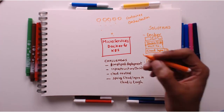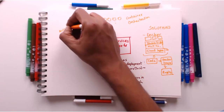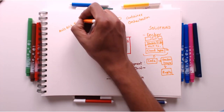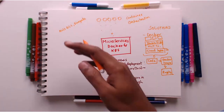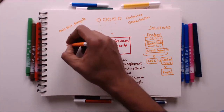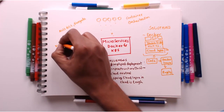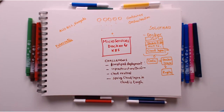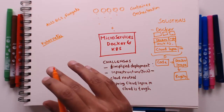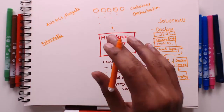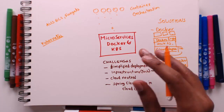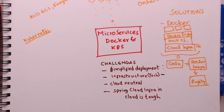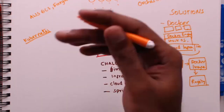One cloud-specific solution is AWS Fargate, or AWS ECS Fargate — you cannot use ECS or Fargate outside AWS. The other option is Kubernetes, and the great thing about Kubernetes is that it's a cloud-neutral solution. Once you use Kubernetes for container orchestration, you can easily switch from one cloud to another — from AWS to Azure, Google Cloud, or even back to your own data center.